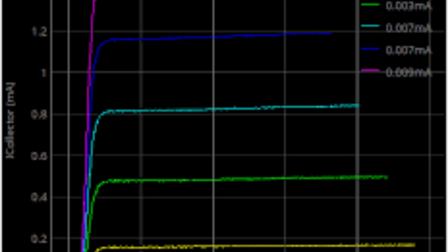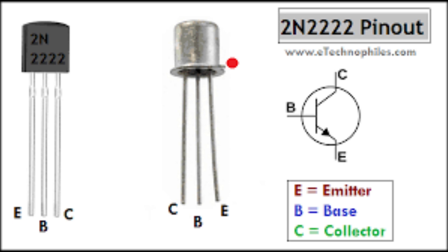The 2N2222 transistor has several electrical characteristics that determine its behavior in electronic circuits. Collector current is the maximum current that can flow between the collector and emitter terminals when the base current is sufficient; for the 2N2222, the typical collector current is 600 mA. Base current is the current that flows into the base terminal and controls the flow of current between the collector and emitter; the typical base current for the 2N2222 is 15 to 20 mA.